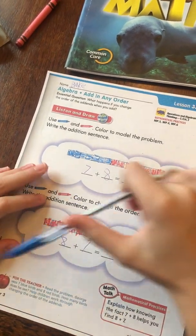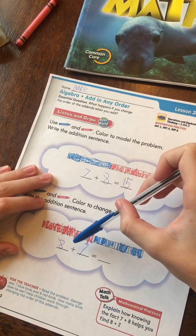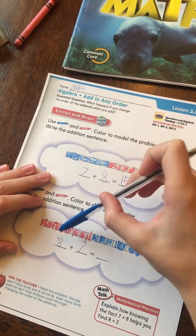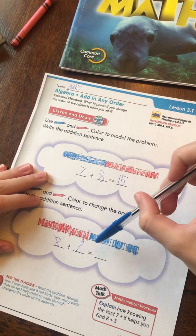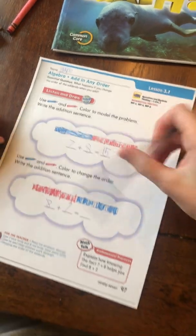So, if we counted them all, one, two, three, four, five, six, seven, eight, nine, ten, eleven, twelve, thirteen, fourteen, fifteen. Oh, it's still 15.